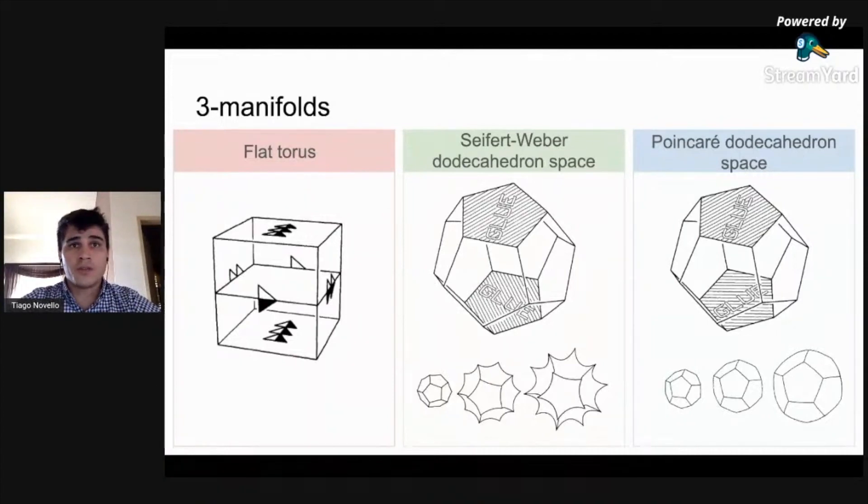Thus, the desired dodecahedron should have a dihedral angle of 72 degrees. We use the hyperbolic geometry to model this manifold.